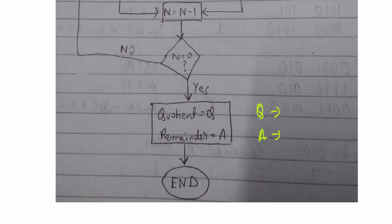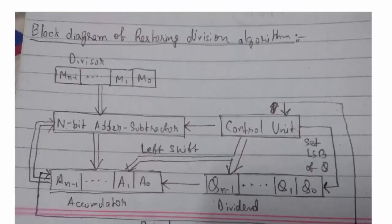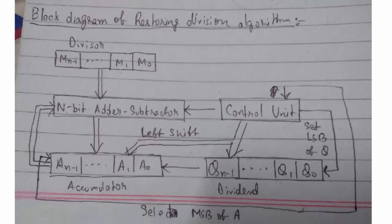After N reaches 0, whatever is stored in Q is the quotient, and whatever is stored in the accumulator A is the remainder. I have also drawn the block diagram of the restoring division algorithm. We have the divisor M, an N-bit subtractor is used, the result is stored in the accumulator, and the control unit performs the left shift operation, setting Q0 bits accordingly.